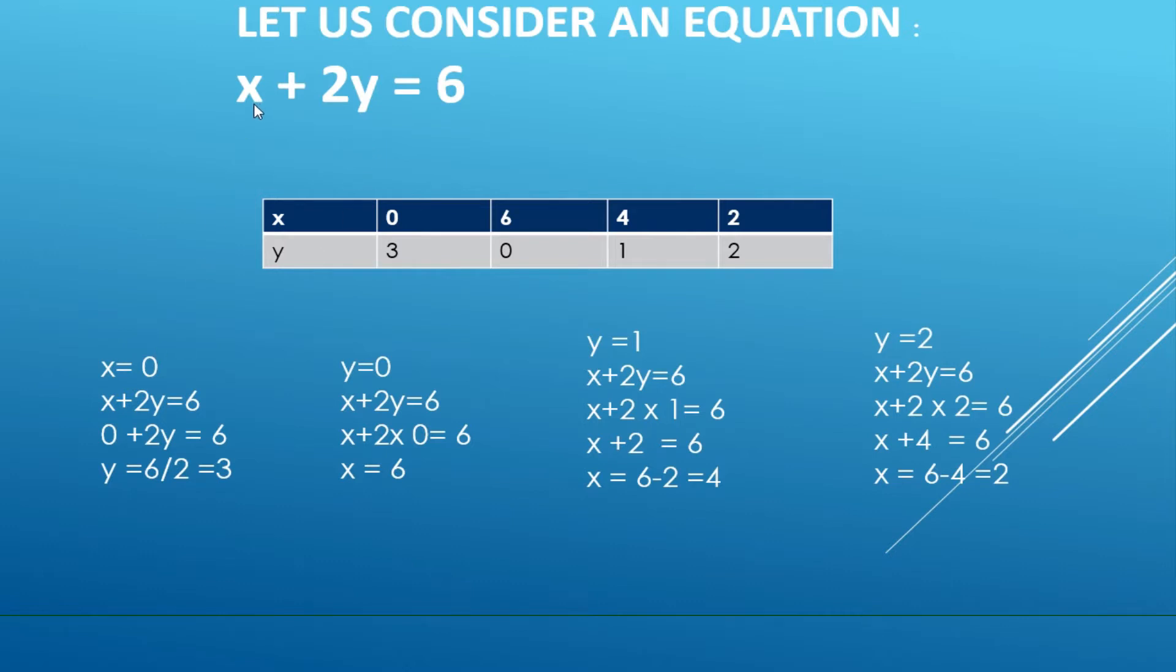Now how we are going to solve this? The best way is whenever you have an equation, first you put the value of x equal to zero. When you put x equal to zero, you will have zero plus 2y equals 6. This two comes over here, you will have y equals three, right?